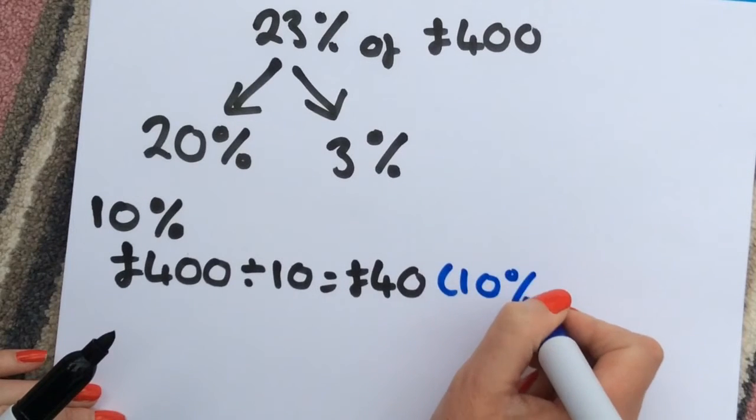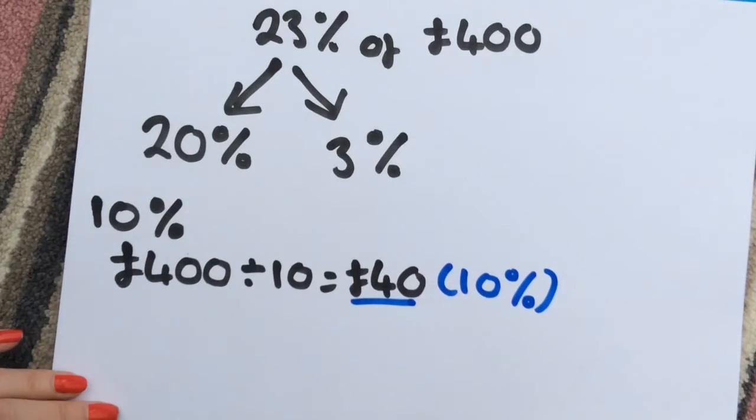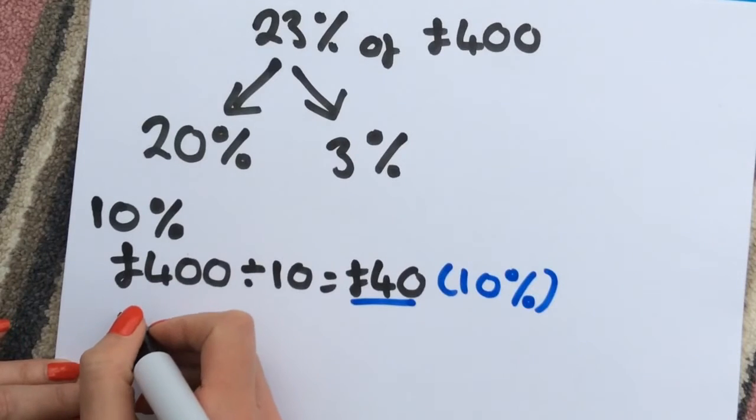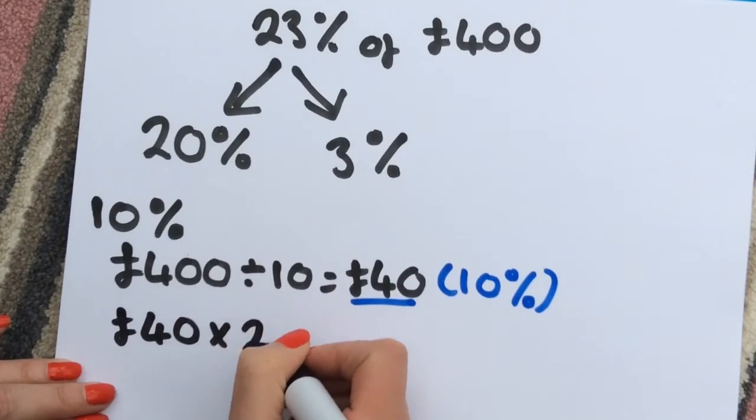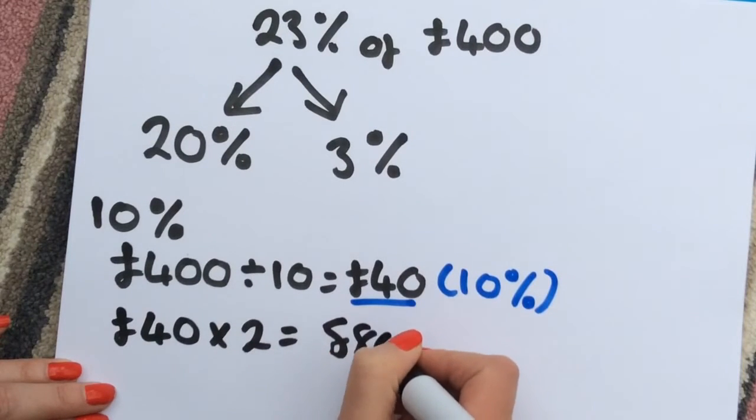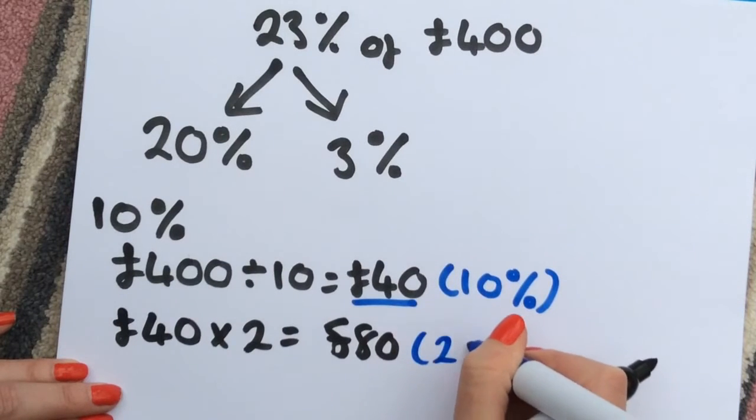It's often useful to use other colors just to show this. Now we want to find 20%. So we take our £40 and we multiply it by 2, which is going to give us £80. That's now our 20%.